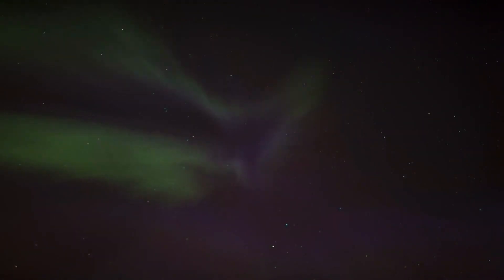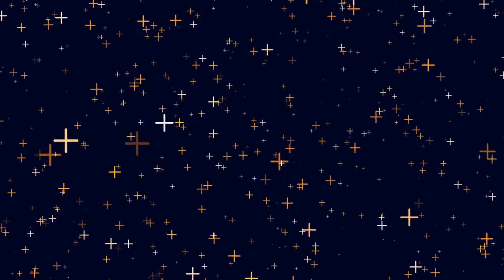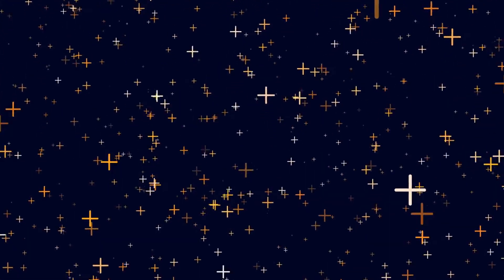The star in question? T Coronae Borealis, or as its friends call it, T Cor Bor. It's a white dwarf star chilling 3,000 light years away from Earth in the Corona Borealis constellation, which is kind of like its own cosmic neighborhood.